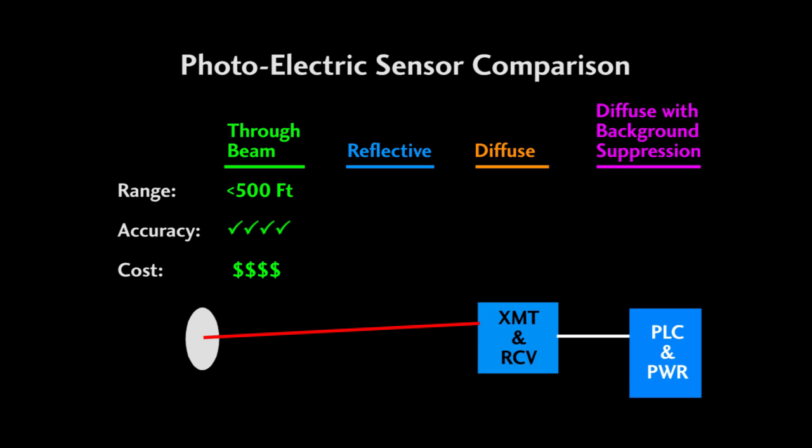Reflective photoelectric sensors shoot a beam at a reflector, so one sensor head acts as both the transmitter and the receiver, which makes them less expensive, but also means they have a shorter range and will be a little less accurate.